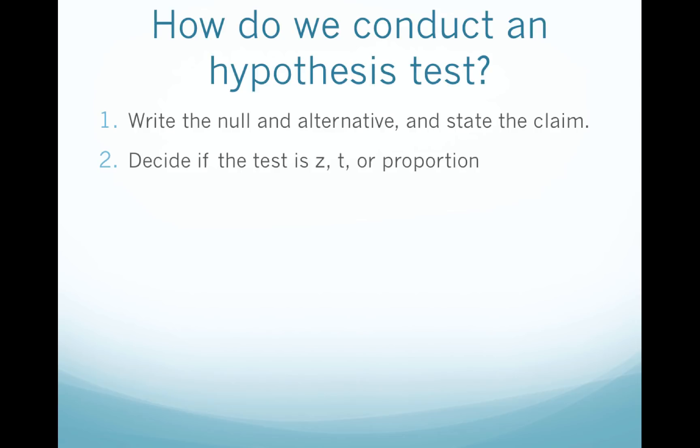Step two: decide if the test is z, t, or proportion. With proportion, we're dealing with qualitative data and reading a percent — those are our clues for proportion. With z, we know we are either given the population standard deviation or the known standard deviation. And t is kind of the catch-all for other situations, such as when we're using data or we have a sample standard deviation.